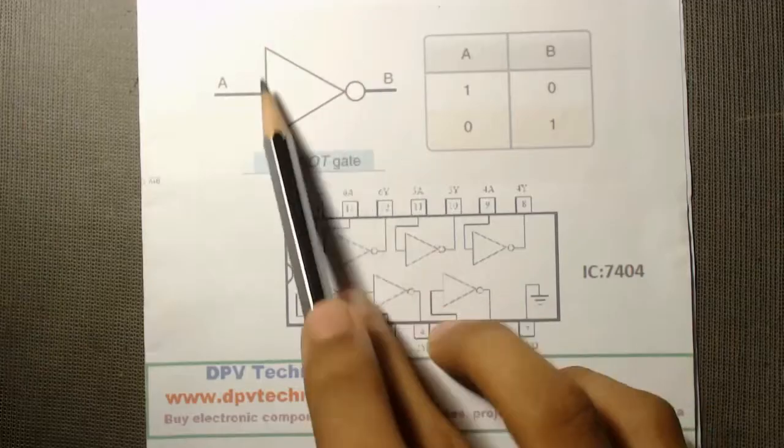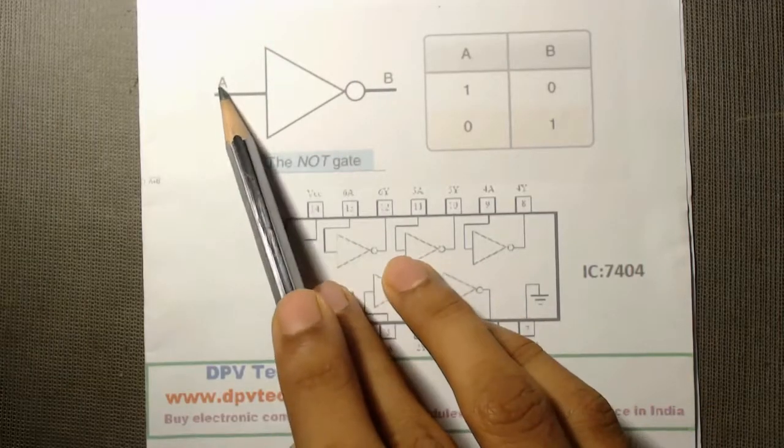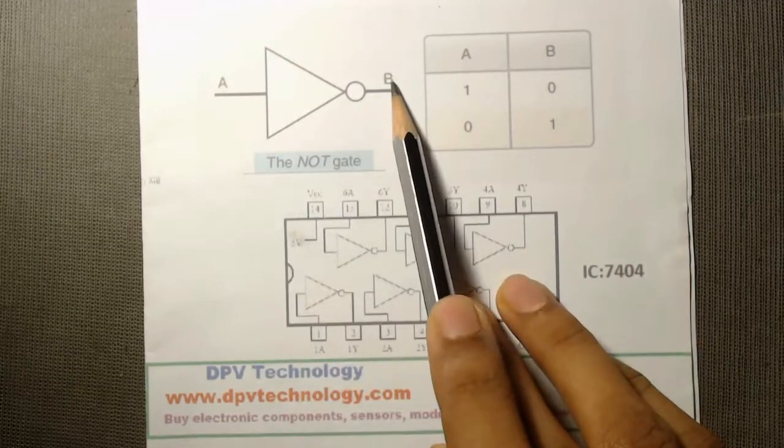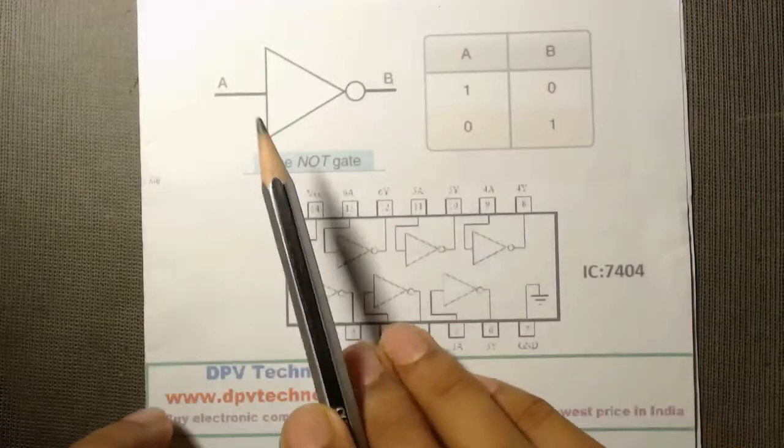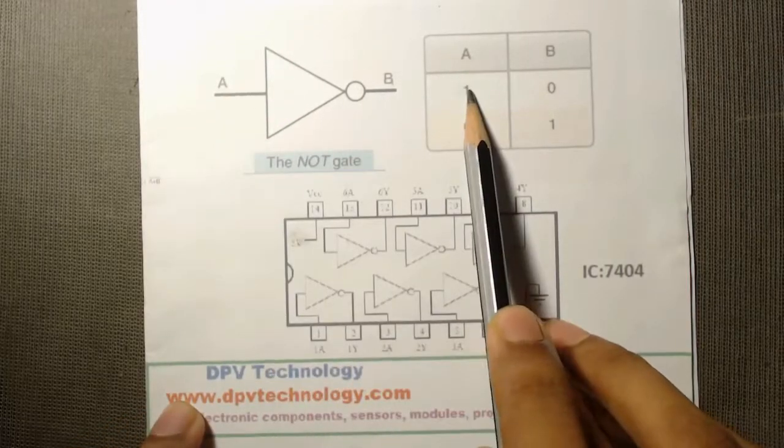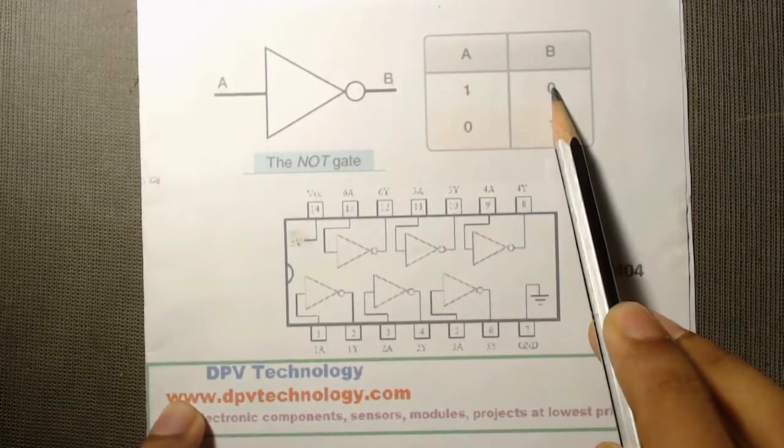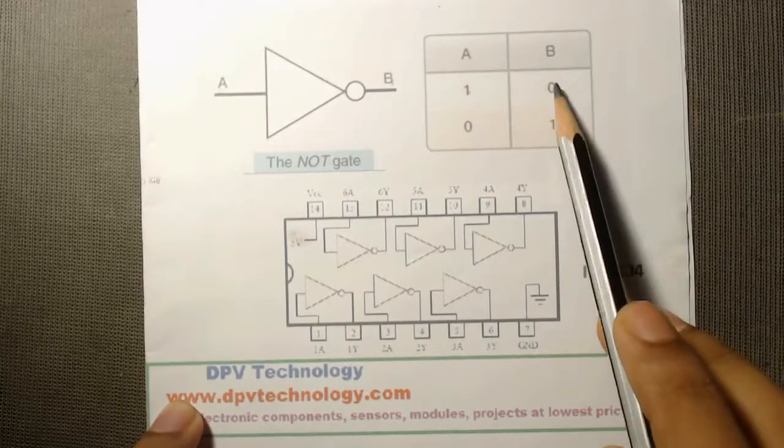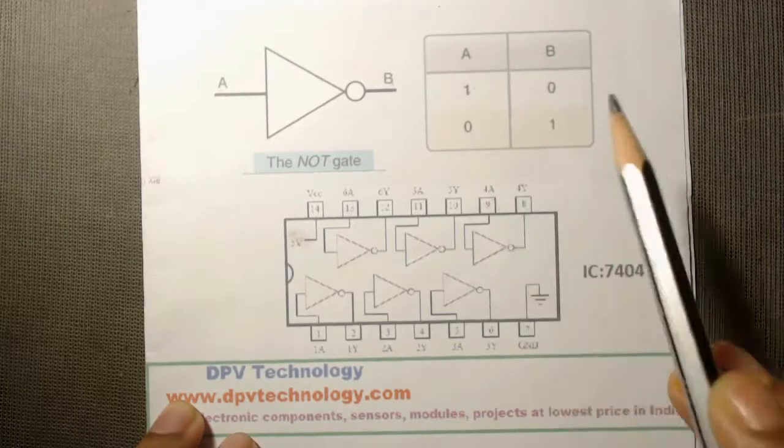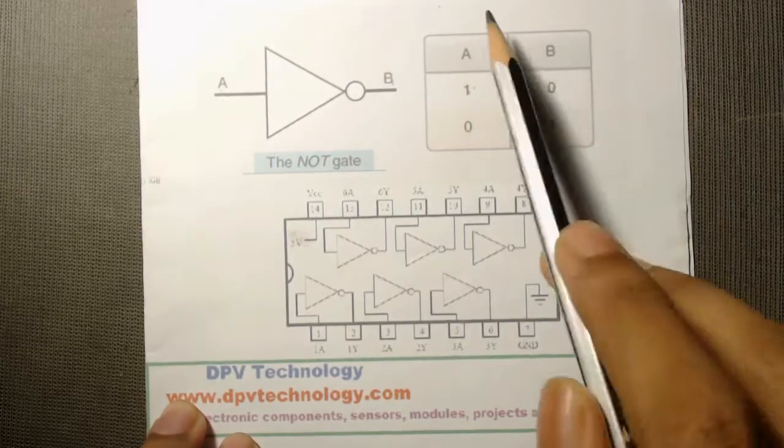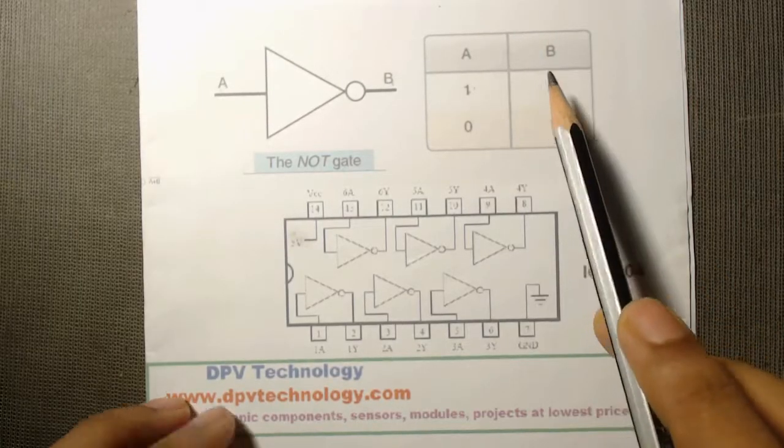Here is the logic symbol of a NOT gate. It has one input terminal and one output terminal. When we apply 1 at the input, it gives 0 at the output. That means it inverts the input. When we apply 0, it gives 1. This is the truth table of a NOT gate.